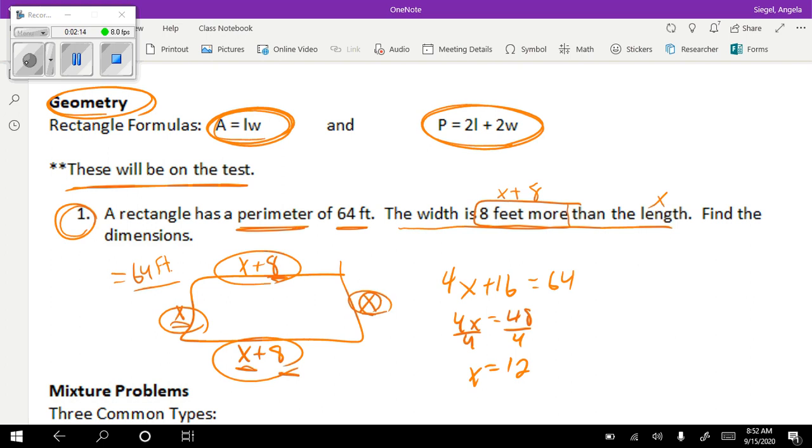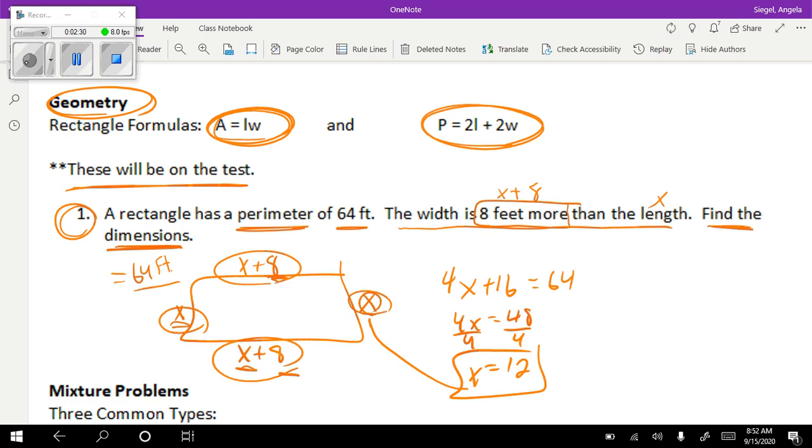I think a really important thing on this is to be able to answer the question. So the question is find the dimensions. It's not telling us to find x. It's great that we did, but we need to find the dimensions. So the dimensions of the length are 12 feet, but the dimensions of the width are 12 plus 8, which is 20. So that is our first word problem. Hopefully, that's not too scary.